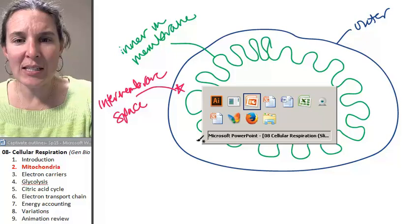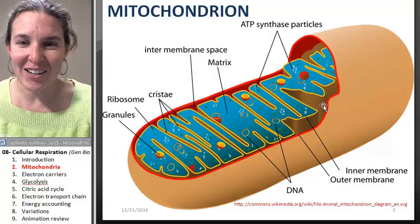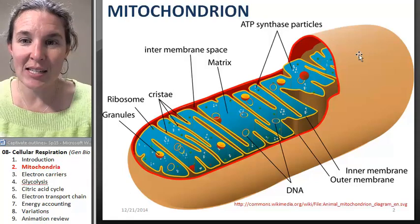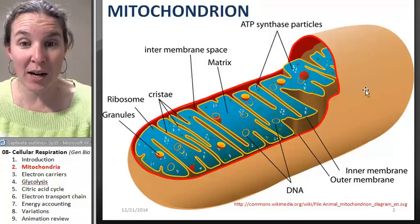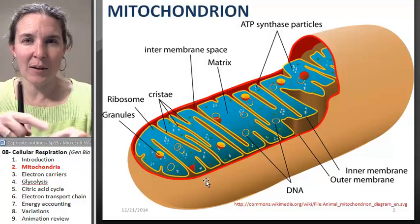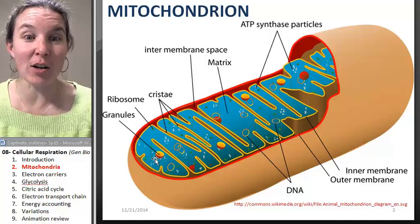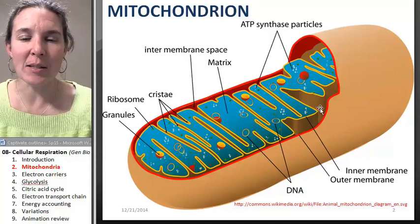Some other pieces of the mitochondria, check it out. Like right here, here's my inter-membrane space. This brown capsule is the outer membrane. This yellow super squiggly inner membrane is my inner membrane and the space in between them.